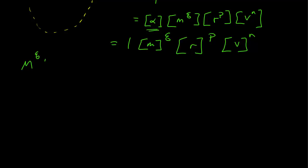The dimension of radius is a length, that's to the p. And the dimension of velocity is a length per time, and that's to the n power. So that is equal to mass to the q, the length to the p plus n, since I have a length to the p power and a length to the n power, all divided by time to the n power.